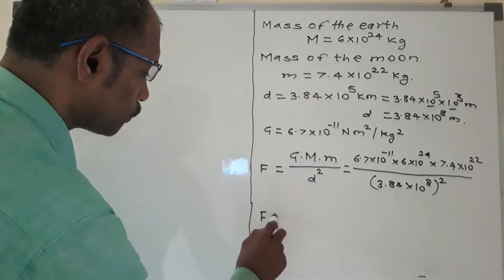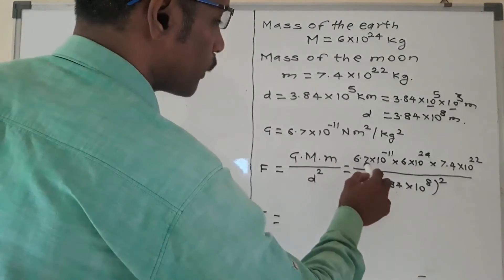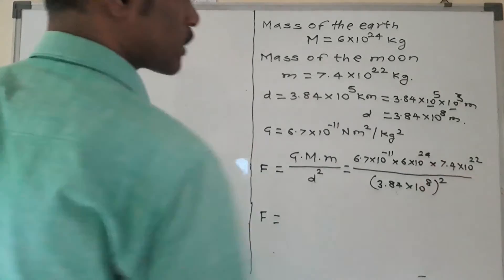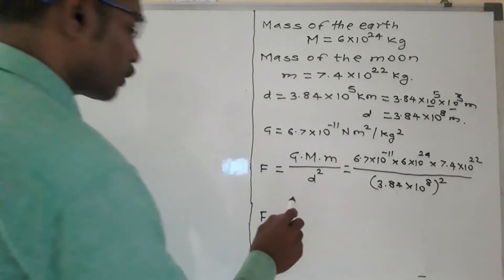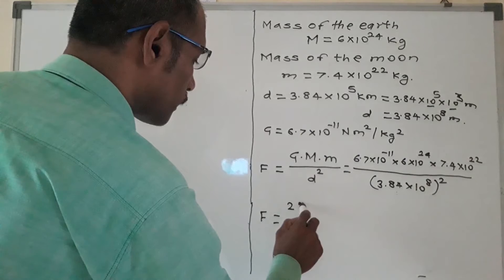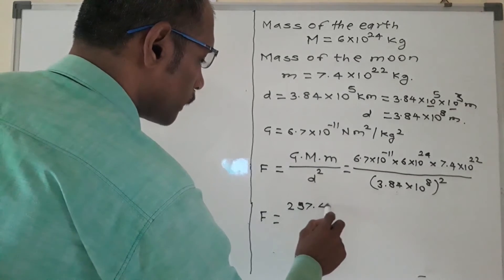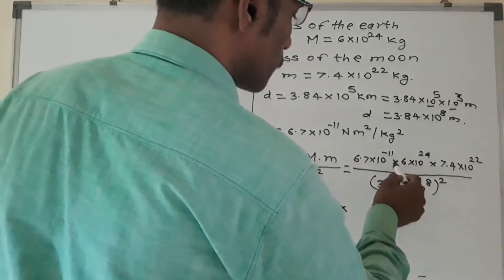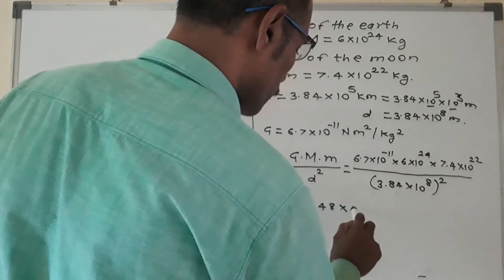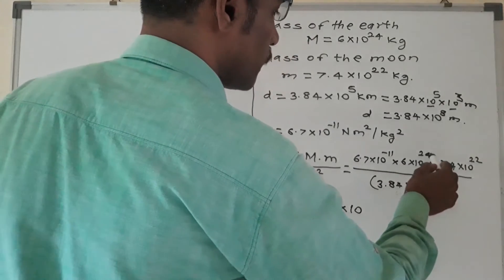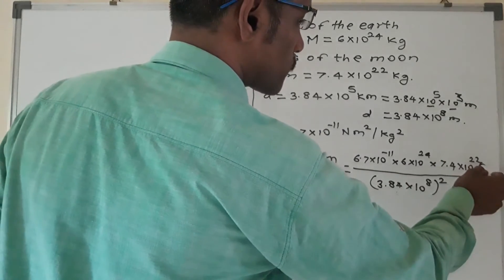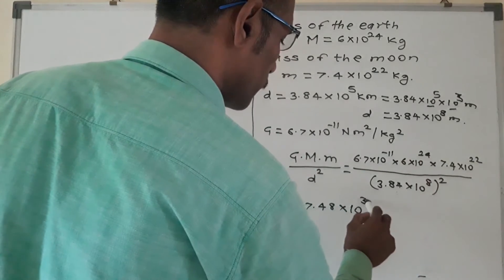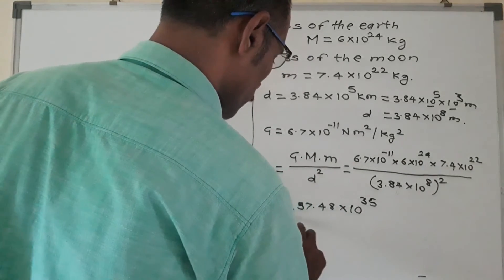Now here F is equal to - 6.7 into 6 means 40.2, into 7.4 means 297.48, this is approximate. Now here bases are same, then we use laws of indices. 24 plus 22 means 46, 46 minus 11 means 35, upon...